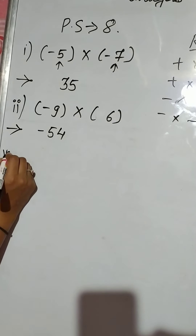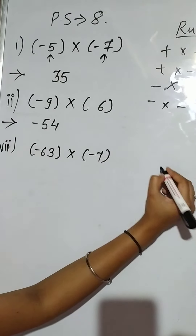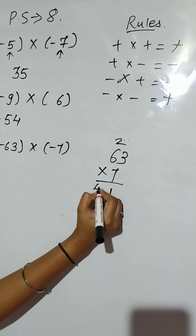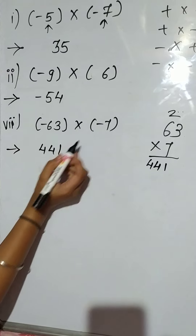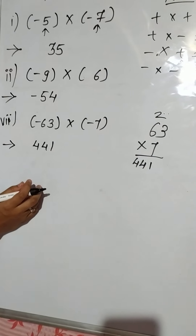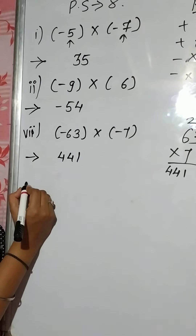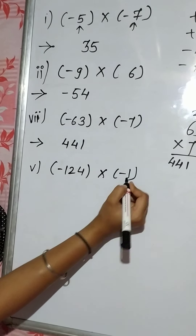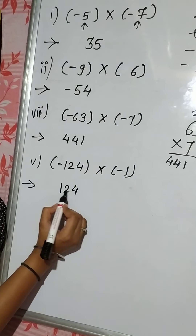We will do one more difficult example — the 7th one: 63 into minus 7. We multiply 63 into 7 to get 441. And plus minus is minus, so the answer is minus 441. We will also take the 5th one: minus 124 into minus 1. 124 into 1 is obviously 124. And minus minus is plus, so there is no need to add any sign — the answer is 124.